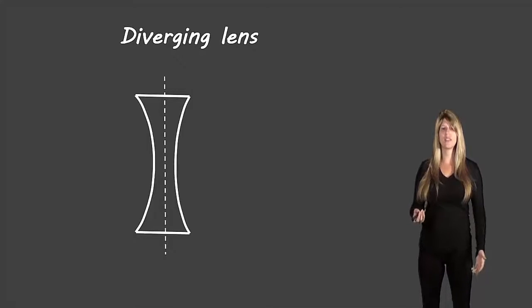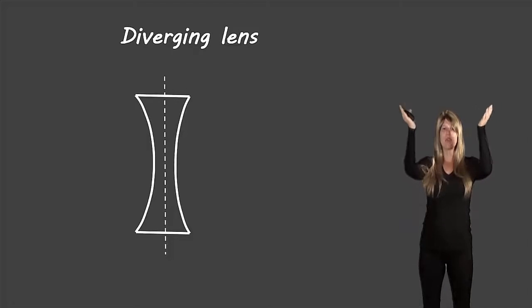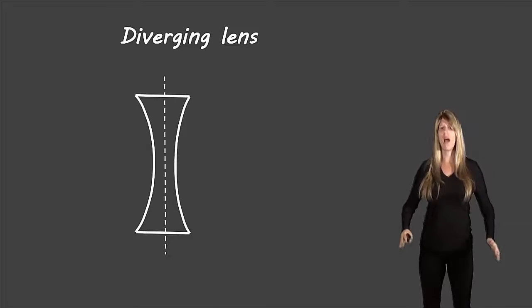Let's take a look at the diverging lenses now. These ones are wide at the top and bottom and they curve inwards in the middle. So wide at the top, skinny in the middle, wide at the bottom.